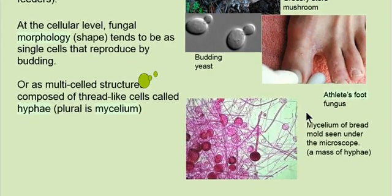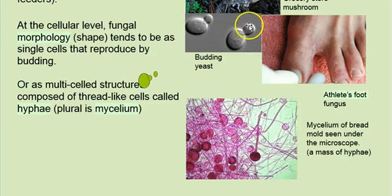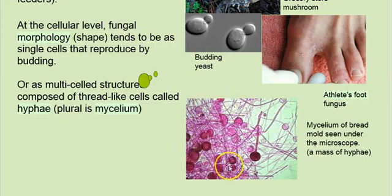At the cellular level, fungi can take two basic forms: they can have a single cell like yeast — this is under the microscope — and they have this budding, that's how they develop. Or they can form multi-celled structures. There are thread-like cells called hyphae — you're going to hear that word in this lecture. They often occur in big masses, and the plural for hyphae is mycelium. Here's bread mold under the microscope — doesn't look too appetizing.